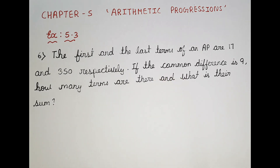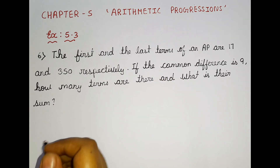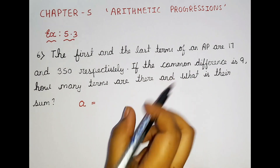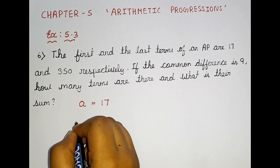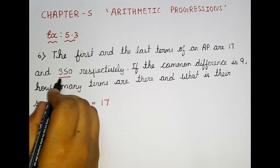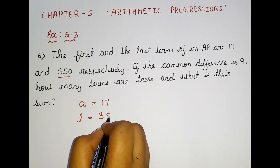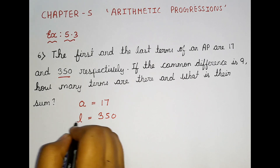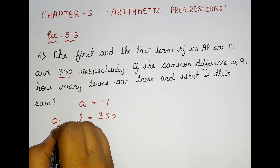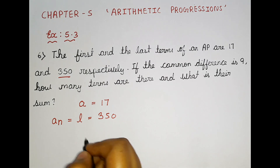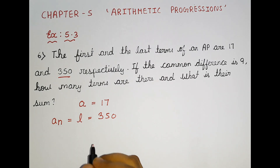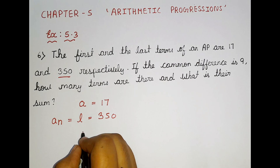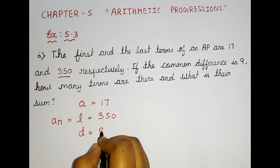So here the first and the last term: the first term A is equal to 17, and the last term is equal to 350. Whenever we have L, the value for AN is also 350 — because both are the same. The common difference D is equal to 9.